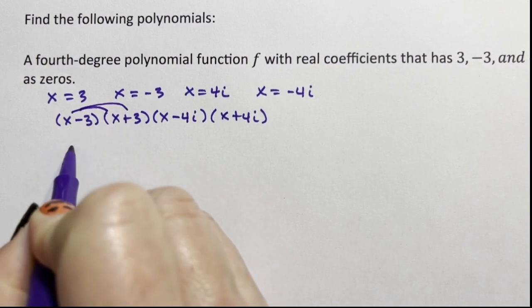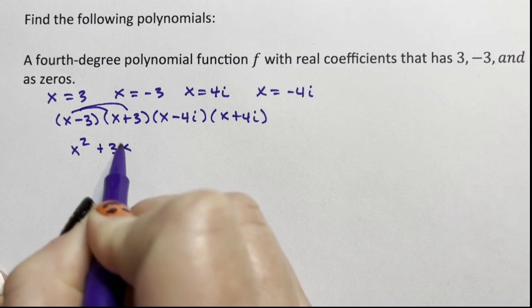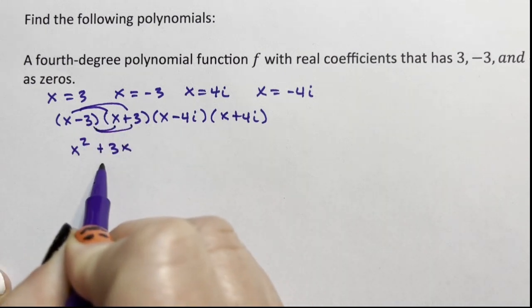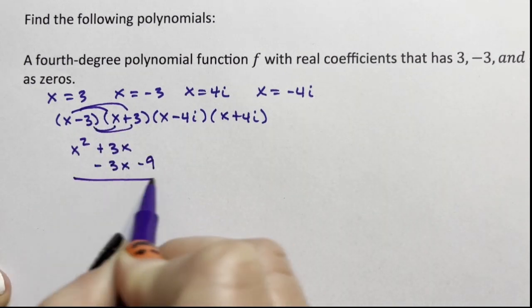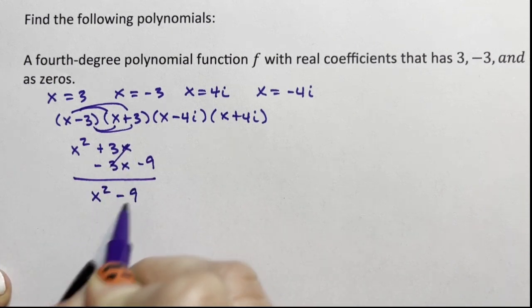I'm going to distribute the x in to get x² + 3x. I'm going to distribute the -3 through to get -3x - 9. Those are going to go away, and I have x² - 9. Isn't that pretty?